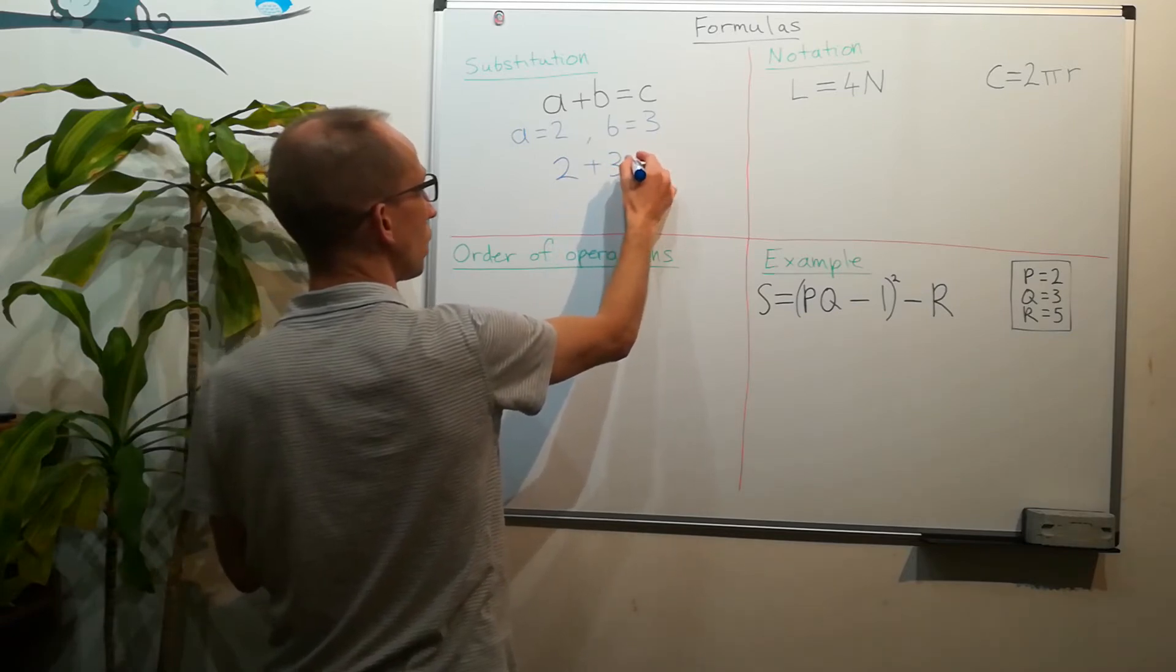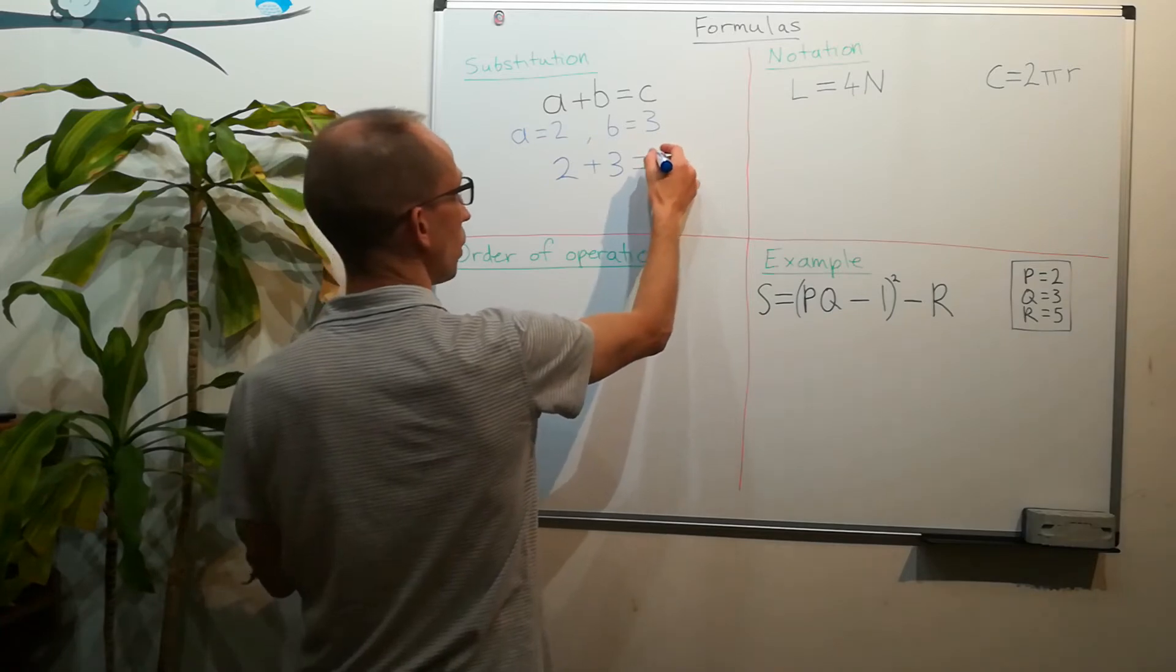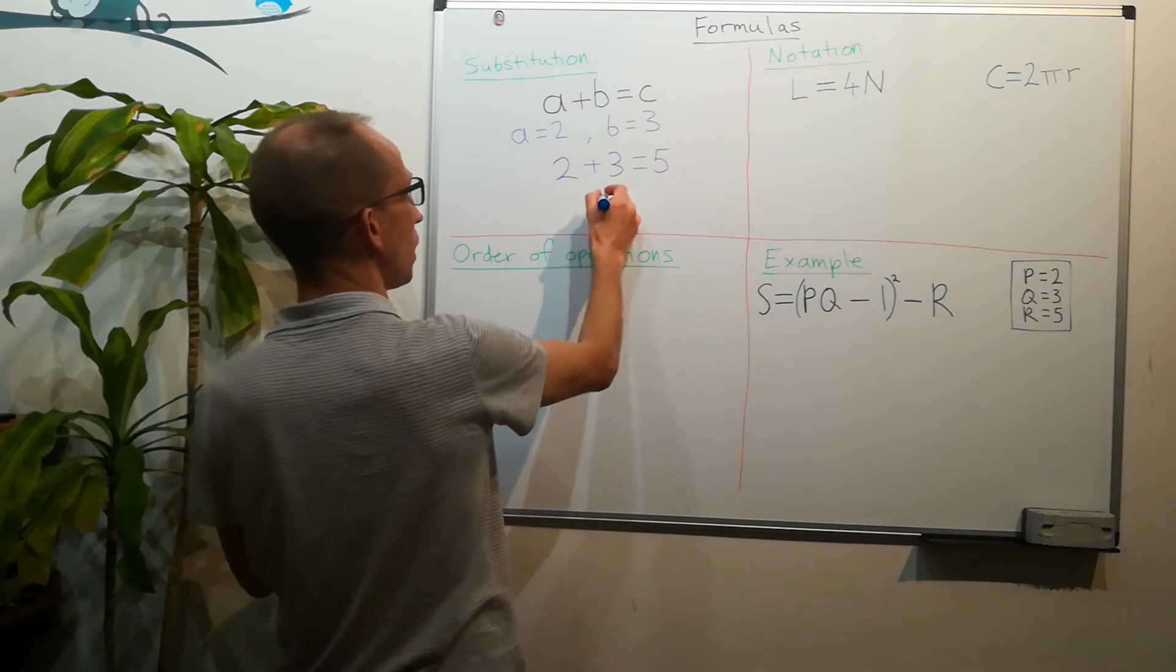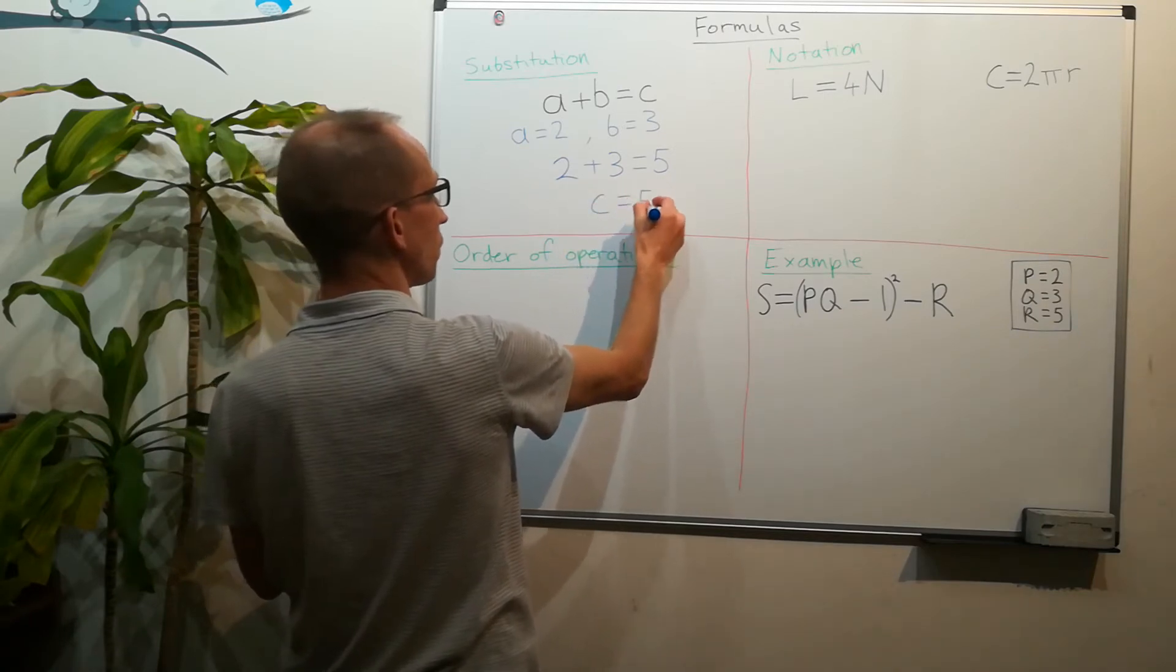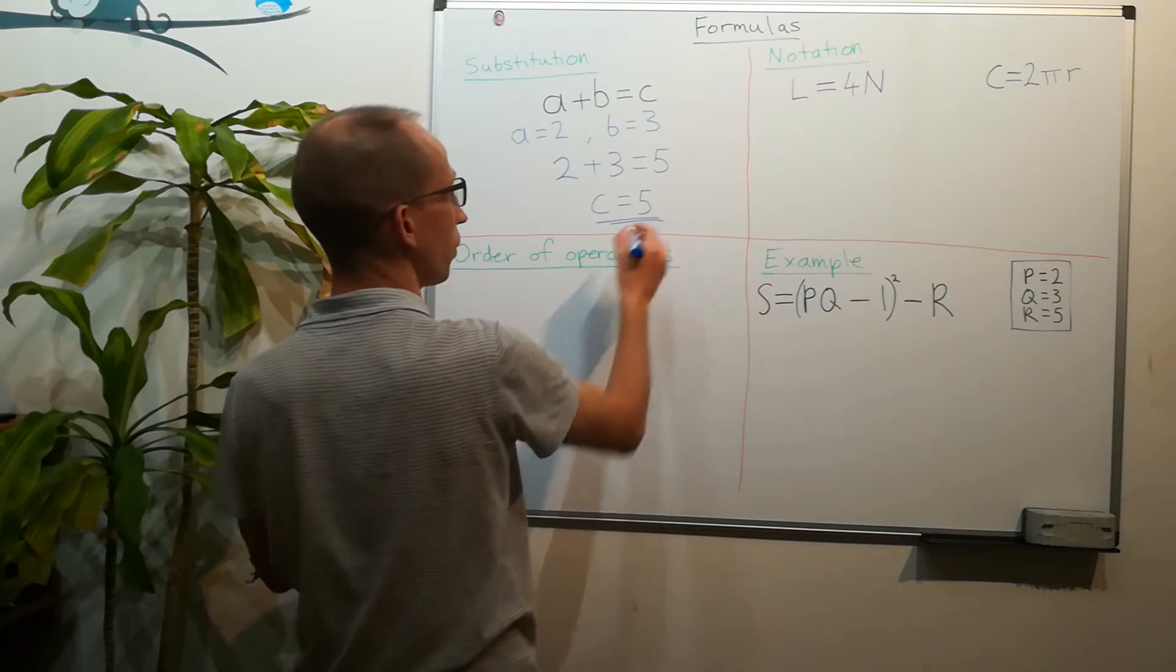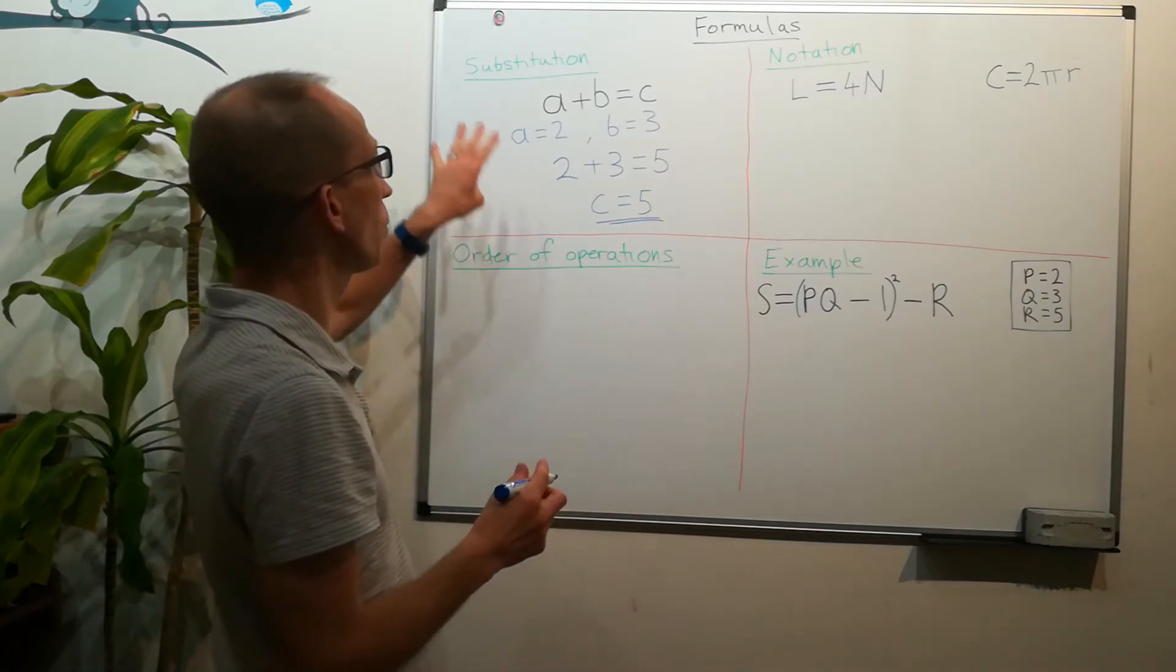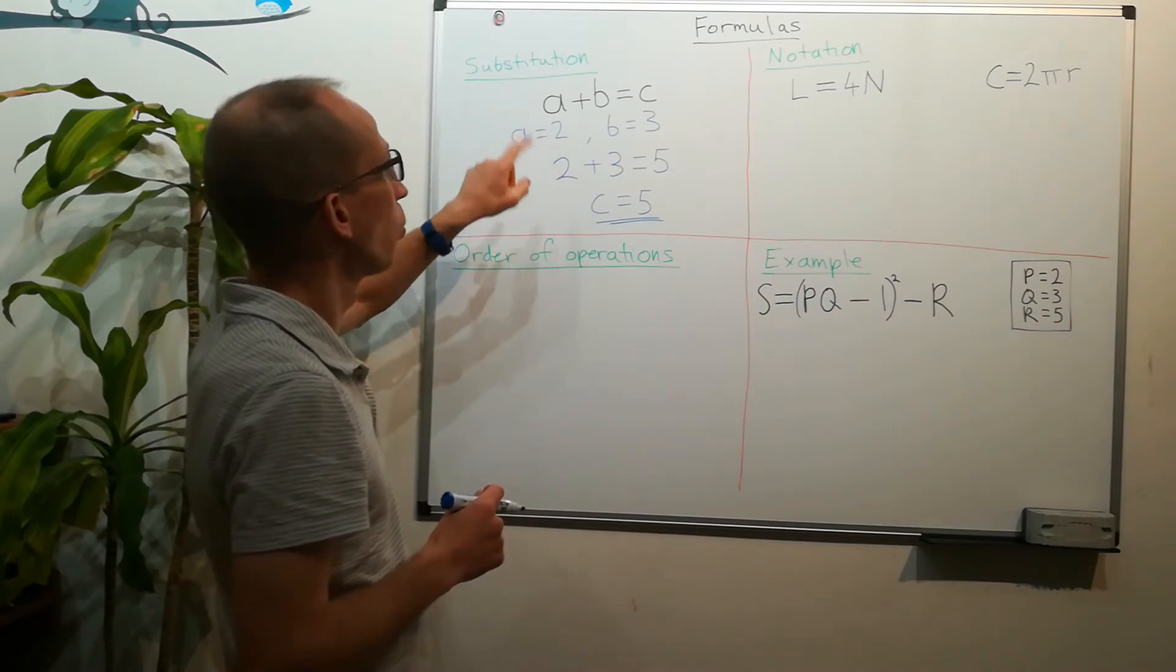So we can say that c is equal to 5. We're not trying to change anything, we're just replacing the symbol or the letter with the values that are given.